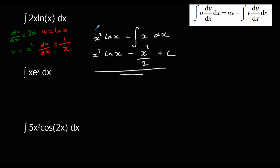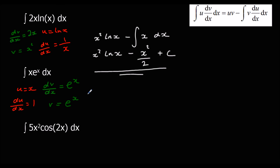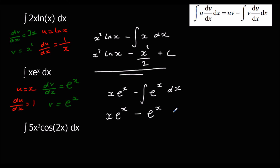For x times eˣ, we want to differentiate x, so u = x which gives du/dx = 1, and dv/dx = eˣ which gives v = eˣ. Substituting in: uv gives x·eˣ, minus the integral of v·du/dx which is eˣ with respect to x. The answer is x·eˣ minus eˣ plus c.